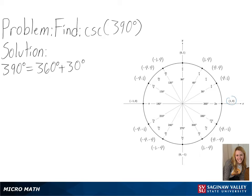So starting at 1-0 and moving counterclockwise, we will go one full rotation around our circle for our 360 degrees, and then continue for another 30 degrees.